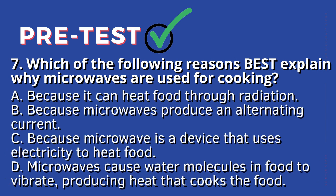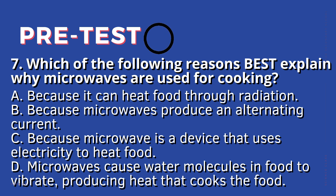7. Which of the following reasons best explains why microwaves are used for cooking? A. Because it can heat food through radiation, B. Because microwaves produce an alternating current, C. Because microwave is a device that uses electricity to heat food, D. Microwaves cause water molecules in food to vibrate, producing heat that cooks the food.